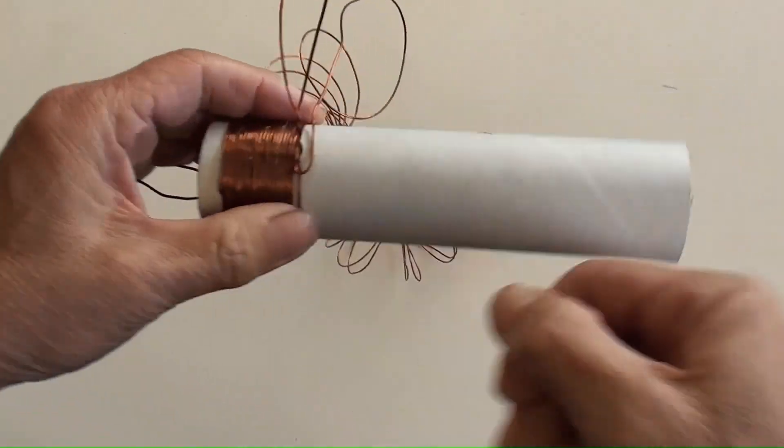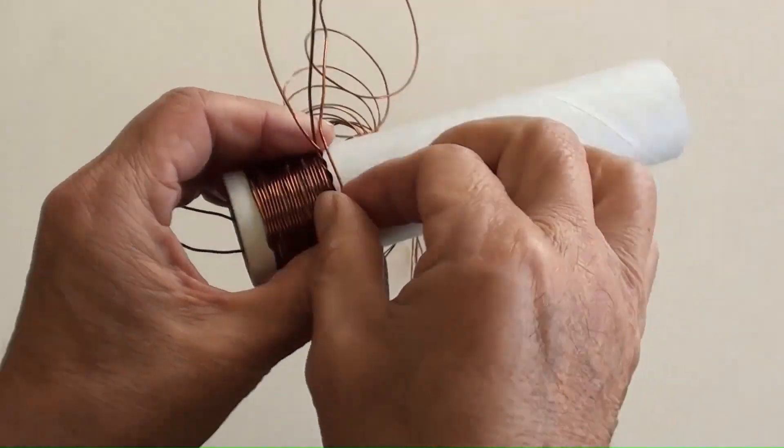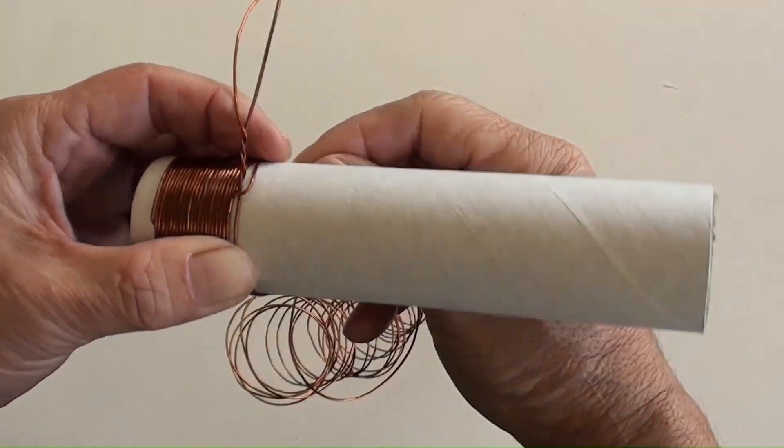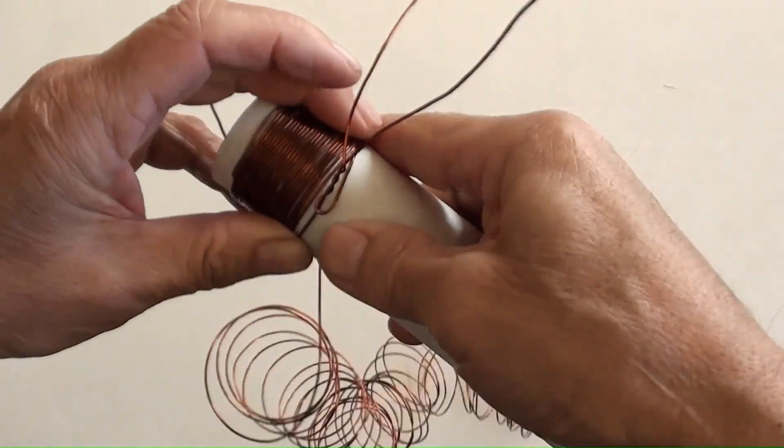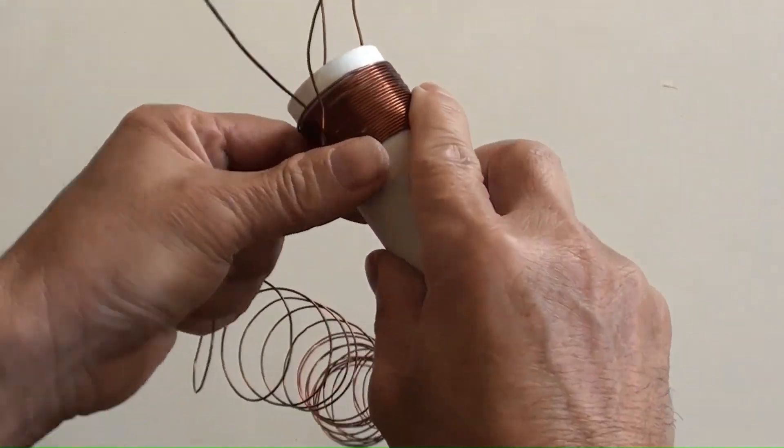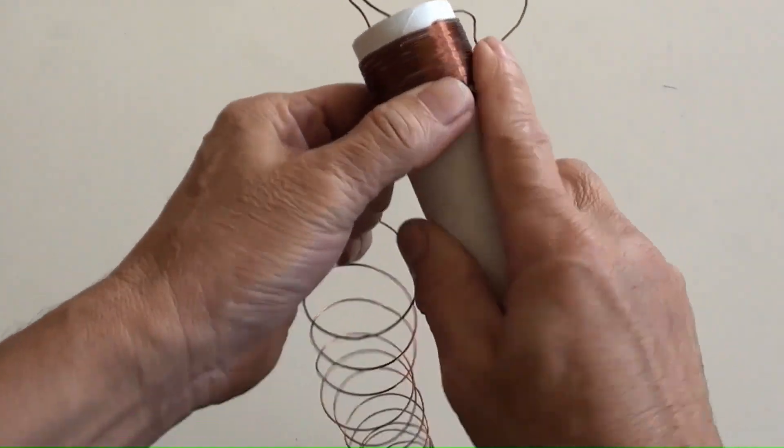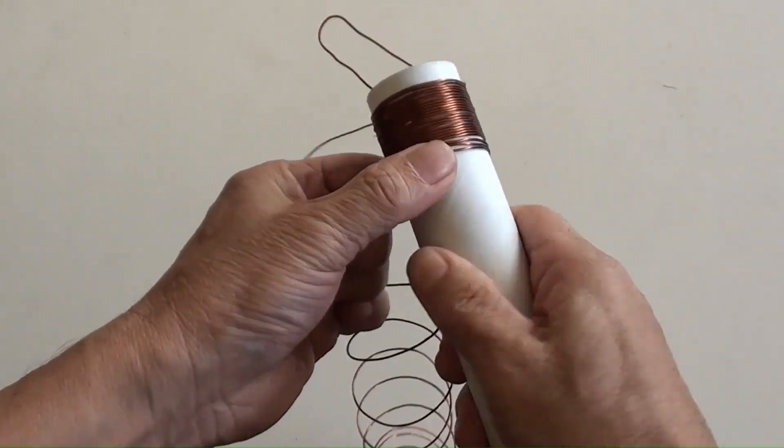Twisted two wires together as a tapped terminal. Then continuing winding the wire in the direction as previously. Again, make sure the windings are tight.